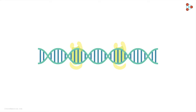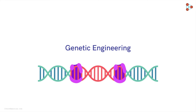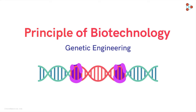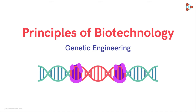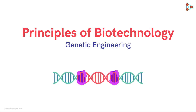On similar lines, when we cut and join genetic material, the process is known as genetic engineering. It's one of the principles of biotechnology. Now let's explore more about these principles in detail. Most of the principles of biotechnology are based on two engineering branches: genetic engineering and chemical engineering.